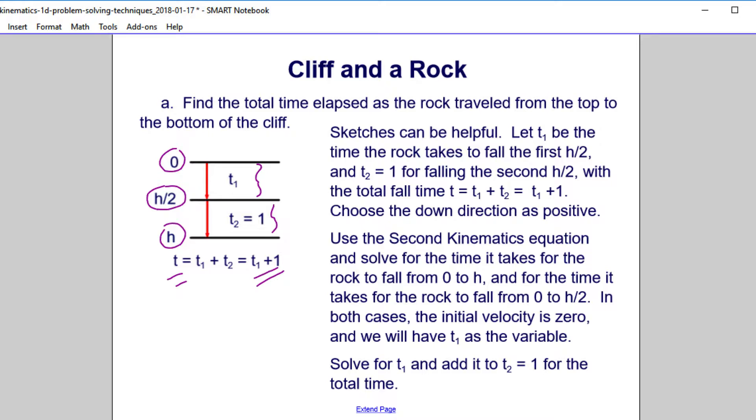And now what we're going to do is use the second kinematics equation, because that has time and position and velocity. And solve for the time it takes for the rock to fall from 0 to h. And let me just erase some of this now and show you what we're doing. We'll find this time. And we'll also find, we'll work with over here, this top, for it to go from 0 to h over 2.